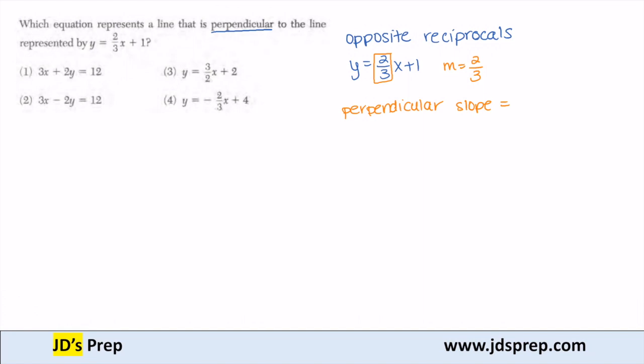So if my original slope is 2 thirds, then my perpendicular slope opposite would be negative and the reciprocal would be 3 over 2. So that's the slope that I'm looking for.